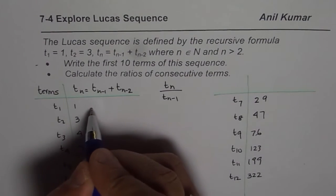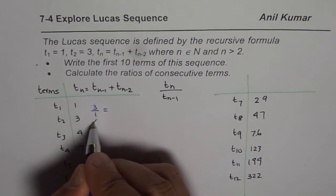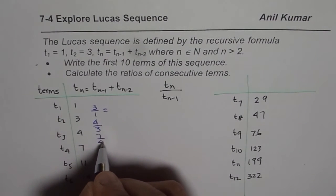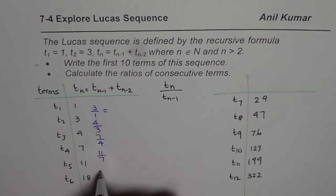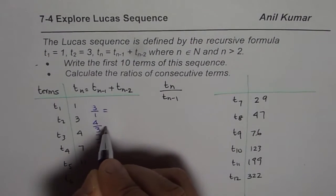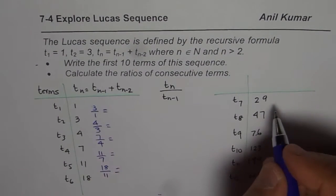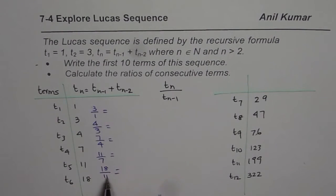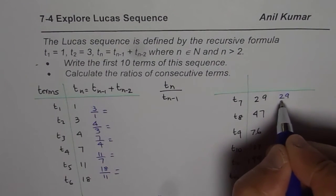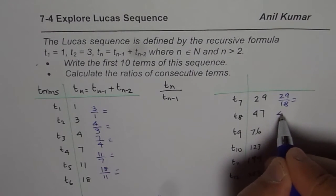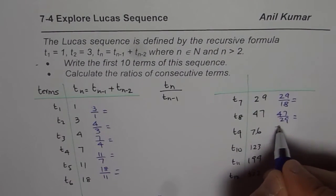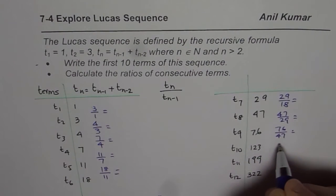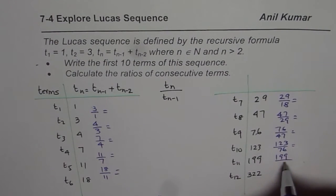now we will write 3 divided by 1 equals 3, then we will say 4 divided by 3, 7 divided by 4, 11 divided by 7, 18 divided by 11. So, we will use calculator to calculate all these values. And here we will do 29 divided by 18, 47 divided by 29, 76 divided by 47, 123 divided by 76, 199 divided by 123, and then we will do 322 divided by 199.